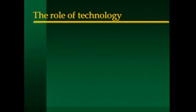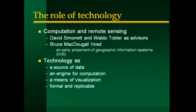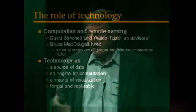So if I were to try to move this forward — and this again is a 2003 slide — it would suggest this: computation and remote sensing are now an inevitable part of all of this. David Simonet and Waldo Tobler, in fact, were advisors to Ian McHarg back in the 60s. Bruce McDougall was hired — he was an author of a very early text in Geographic Information Systems. And technology became a source of data, an engine for computation, a means of visualization. It provided a framework that was formal and replicable, something that could be defended in court, something that could be shared between people because we shared an understanding of what it was trying to do.